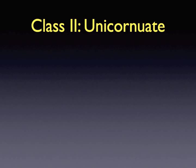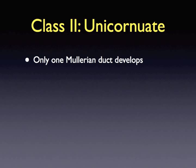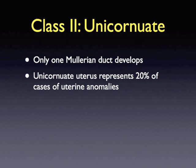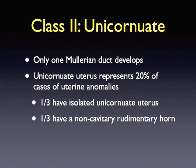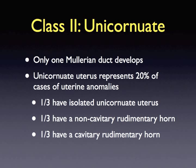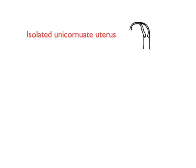Class 2 uterine anomalies occur when only one Müllerian duct develops, resulting in a unicornuate uterus. A unicornuate uterus occurs in 20% of cases involving uterine anomalies. When development of only one Müllerian duct occurs, one-third of patients have an isolated unicornuate uterus, one-third have a non-cavitary rudimentary horn, and one-third are found to have a cavitary rudimentary horn, which may or may not communicate with the unicornuate cavity. In this last case, it is often necessary to remove the cavitary horn to prevent pregnancy and subsequent rupture from occurring in a non-communicating horn.